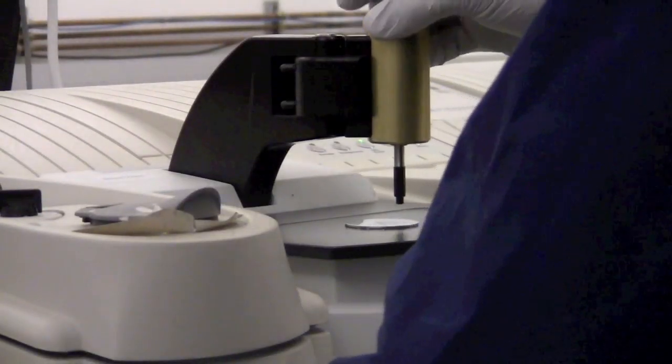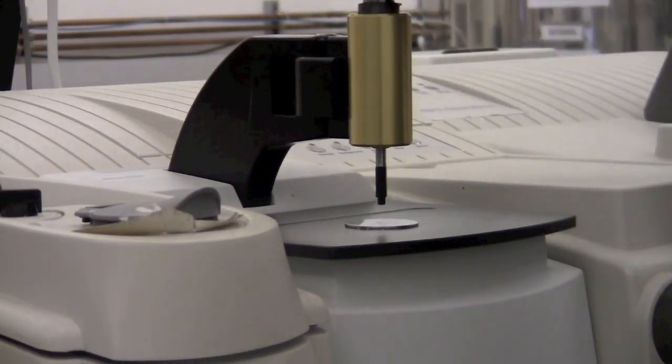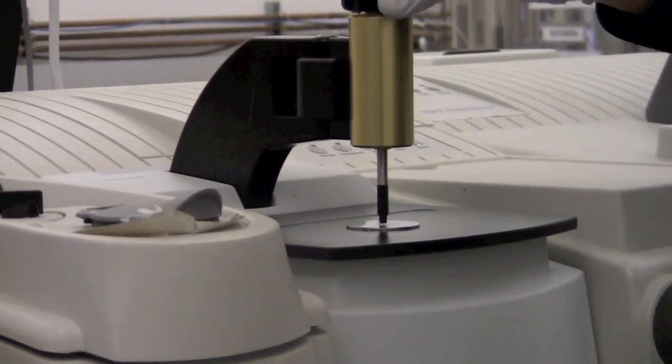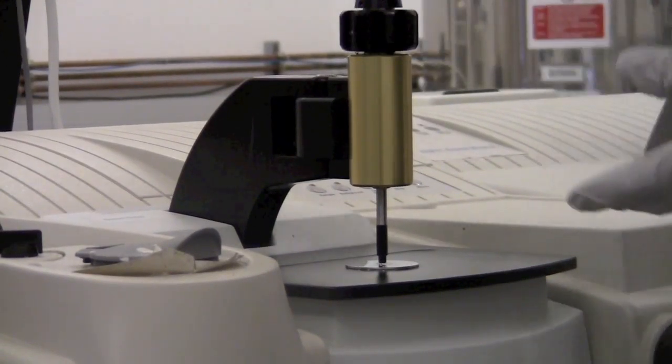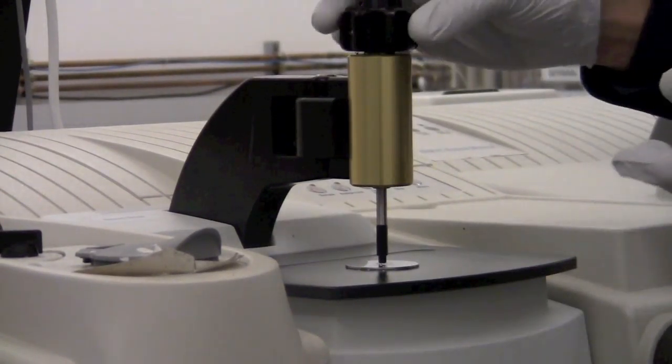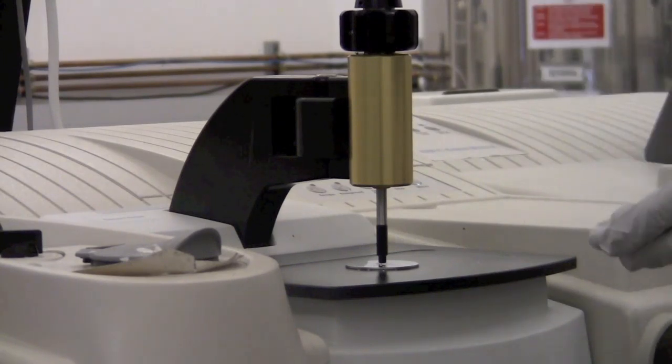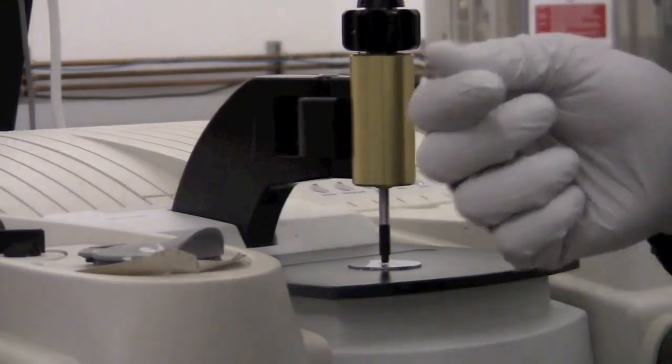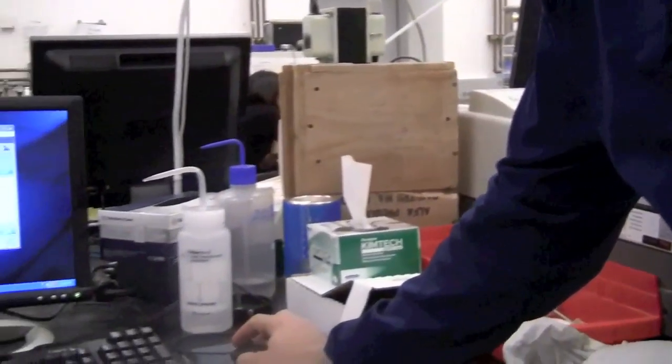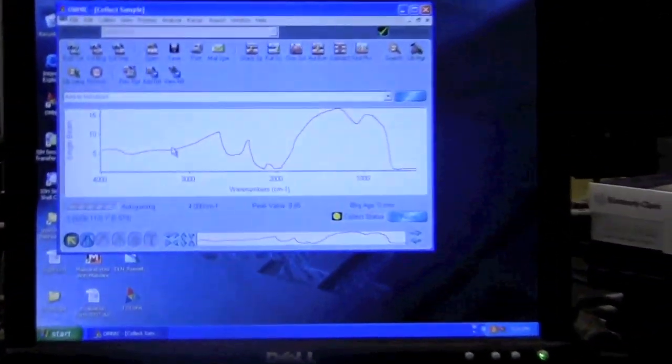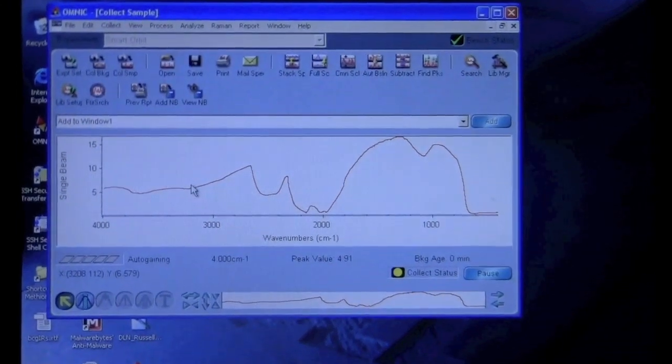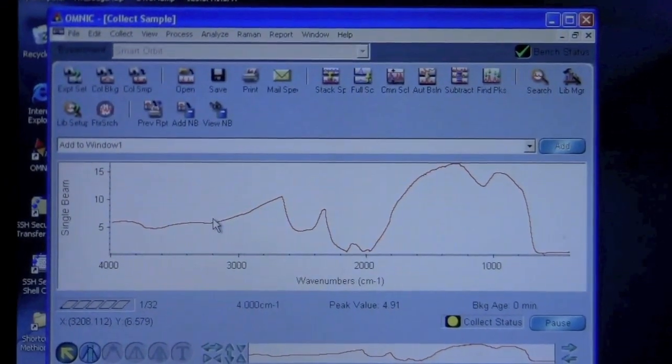Then to make good contact with the surface of the diamond, we use the press here. You turn it until it clicks, and that means it's pressed down hard enough. That ensures you have a repeatable amount of force pressing down on the sample and on the diamond. Then we can go back here and click OK to collect the sample spectrum. It should take the number of scans that you've selected.